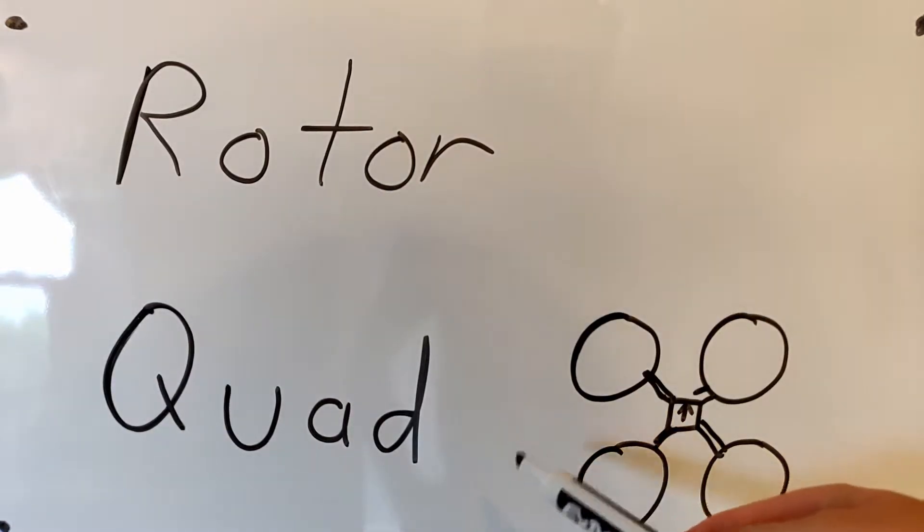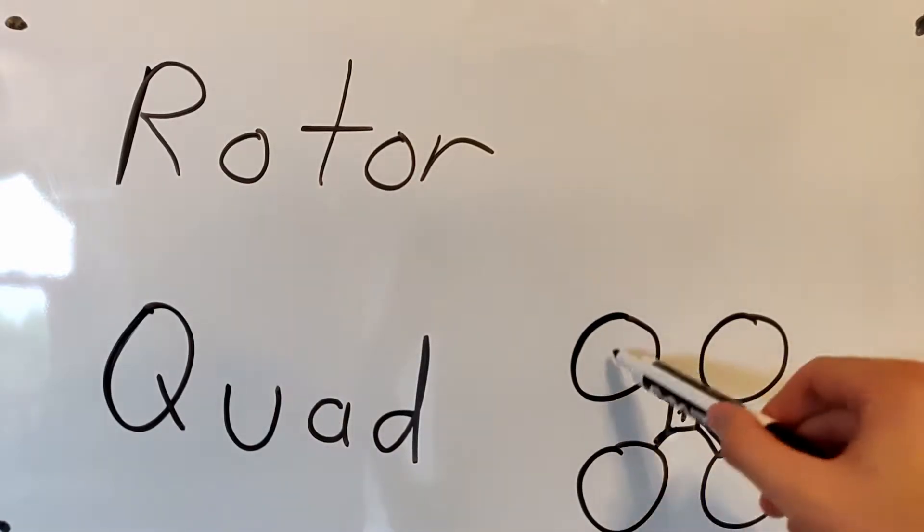So what's a quadcopter? A quad, quadcopter, quad rotor is a specific case of a multi-rotor that has four propellers.